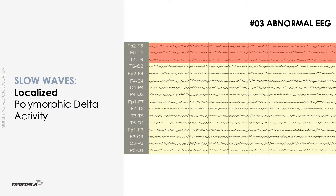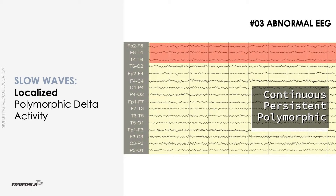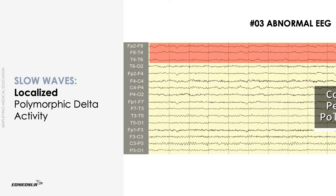A structural lesion is most likely if the delta activity is continuously present. It persists during changes in physiologic states like eye-opening or sleep, and shows variability in frequency, amplitude, and morphology — so-called polymorphic delta activity. Polymorphic delta activity is commonly due to a subcortical white matter lesion inducing disconnection of the cerebral cortex. A purely cortical lesion does not induce polymorphic delta activity.